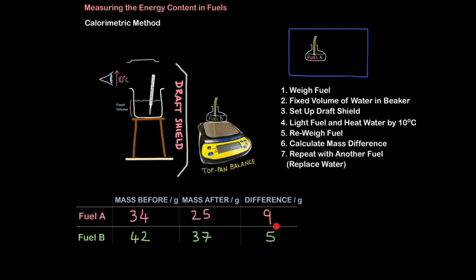Whereas it took 9 grams of fuel A to bring about the same rise, so you needed less of fuel B to bring about the same temperature rise. So obviously fuel B has more energy in it per gram.